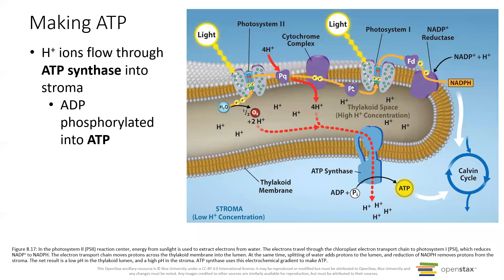Those are our light reactions: the photosystems getting energy from excited electrons, oxidizing special chlorophyll molecules, transporting electrons, making the hydrogen concentration gradient, then using that gradient to make ATP. The electrons are used to make NADPH, and water is split to create hydrogen ions and oxygen. In the next section, we're going to talk about the light-independent reactions in the Calvin cycle.